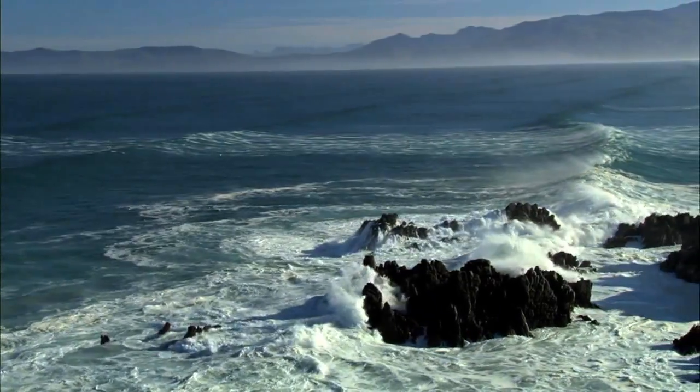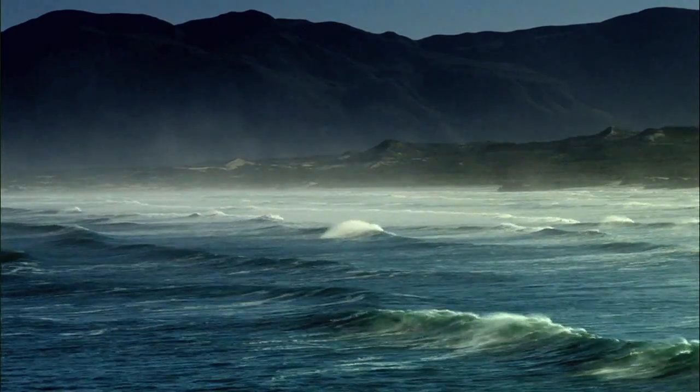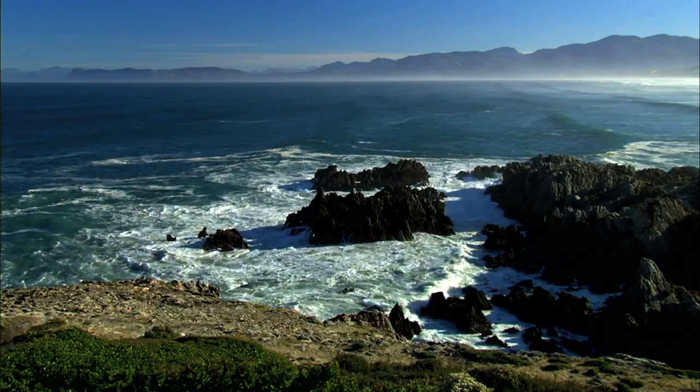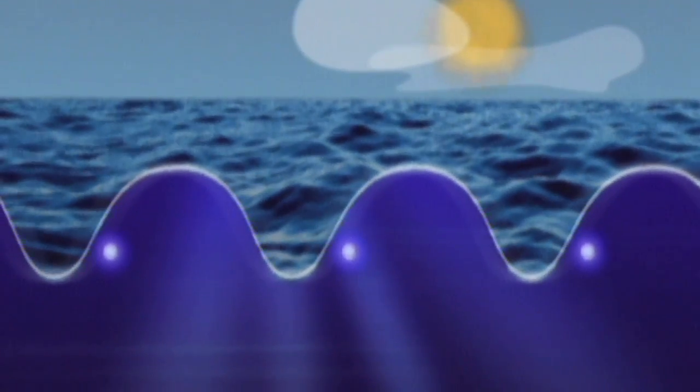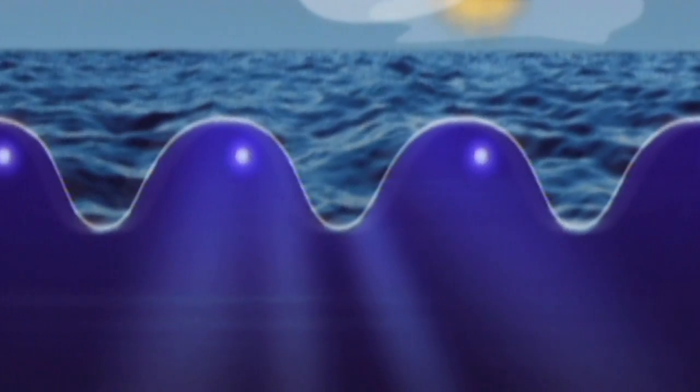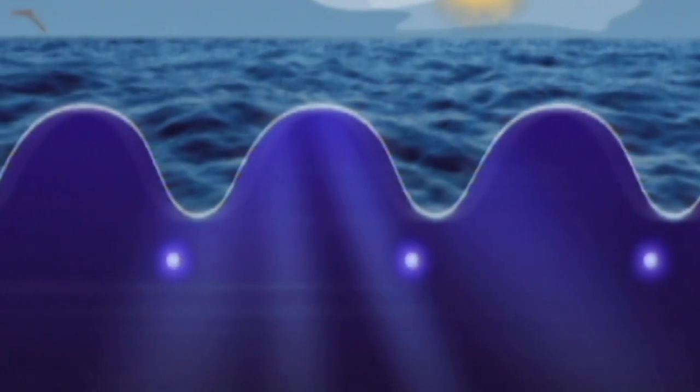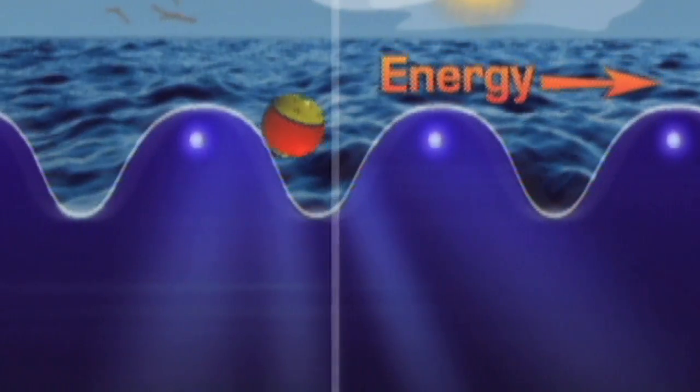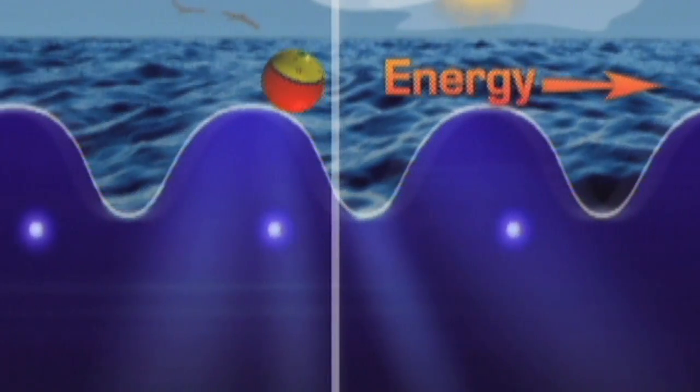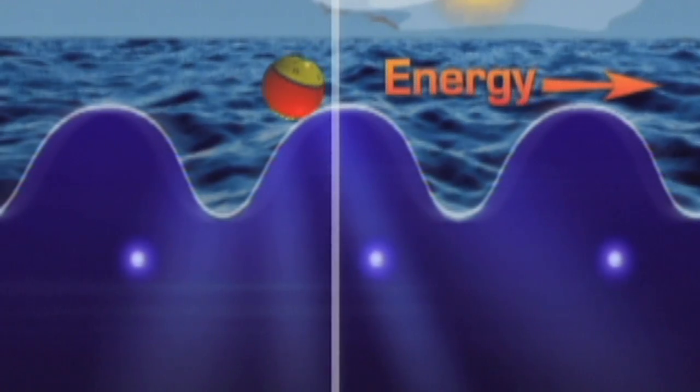Surface waves, like those that occur at the surface of the ocean where water and air meet, are combinations of transverse and longitudinal waves. The water moves up and down like our rope. But the water also moves back and forth like the coils in the spring. Unlike the coils though, the water does not compress. Instead, the up and down and back and forth movements combine to make the particles of water move in a circle, creating the circular motion of surface waves.